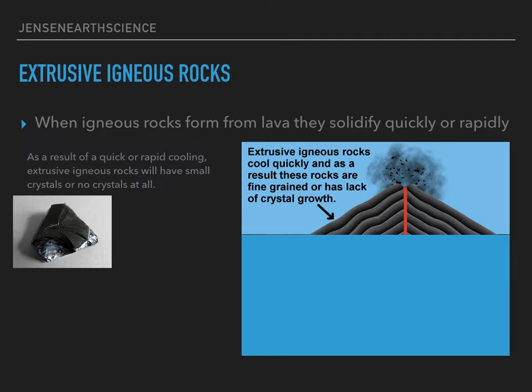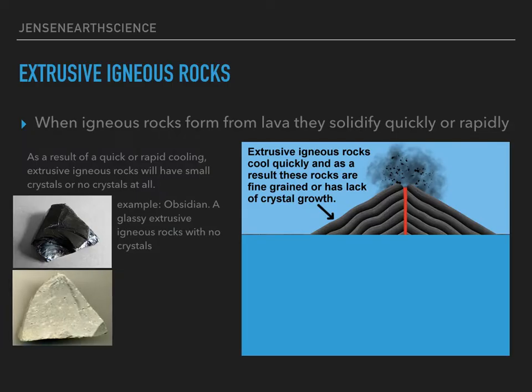This is an example of obsidian. Obsidian is a glassy extrusive igneous rock with no crystals. To be glassy means to have no crystals at all. Another example of an extrusive igneous rock is rhyolite. Rhyolite is an extrusive igneous rock with fine crystals. To have fine crystals means that there are very small crystals — those little specks in that rhyolite are its very, very small crystals.